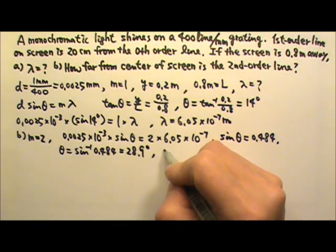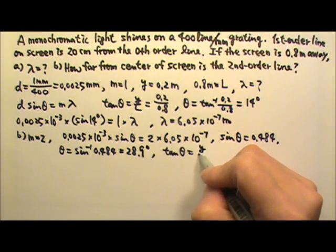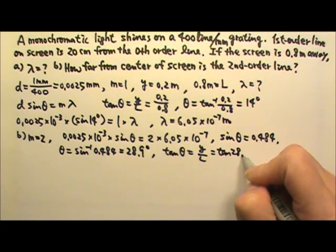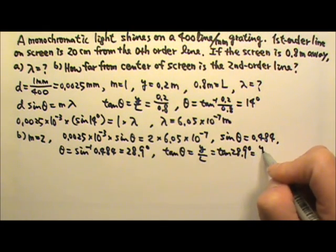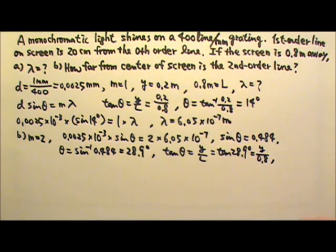So now we can do the tan theta equals to Y over L. So tan 28.9 degrees would equal to Y divided by L, which is 0.8. So this gives us Y equals to 0.43 meters.